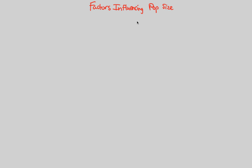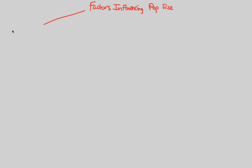Population ecologists have classified factors influencing population size into two main categories. The first group is called density-independent factors, otherwise known as DIF. These are factors that do not rely on the density of the population — they are simply defined as environmental factors.